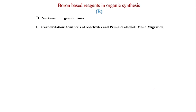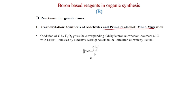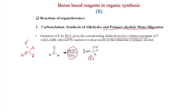This carbonylation mono-migration gives intermediate C. Oxidation of C with NaOH/H2O2 gives the corresponding aldehyde product. When treated with NaOH/H2O2, an oxygen comes in between the C-B bond and ultimately after hydrolysis you get an aldehyde hydrate, which is in equilibrium with the aldehyde.